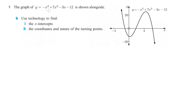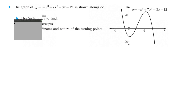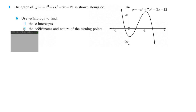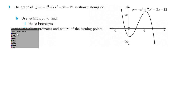First one is number one. The graph of y equals negative x cubed plus 7x squared minus 3x minus 12 is shown. Use technology to find the x-intercepts and the coordinates and nature of the turning point. So bust out the TI-84, 83, or 82. We're going to go into y equals so that we can enter in our equation.